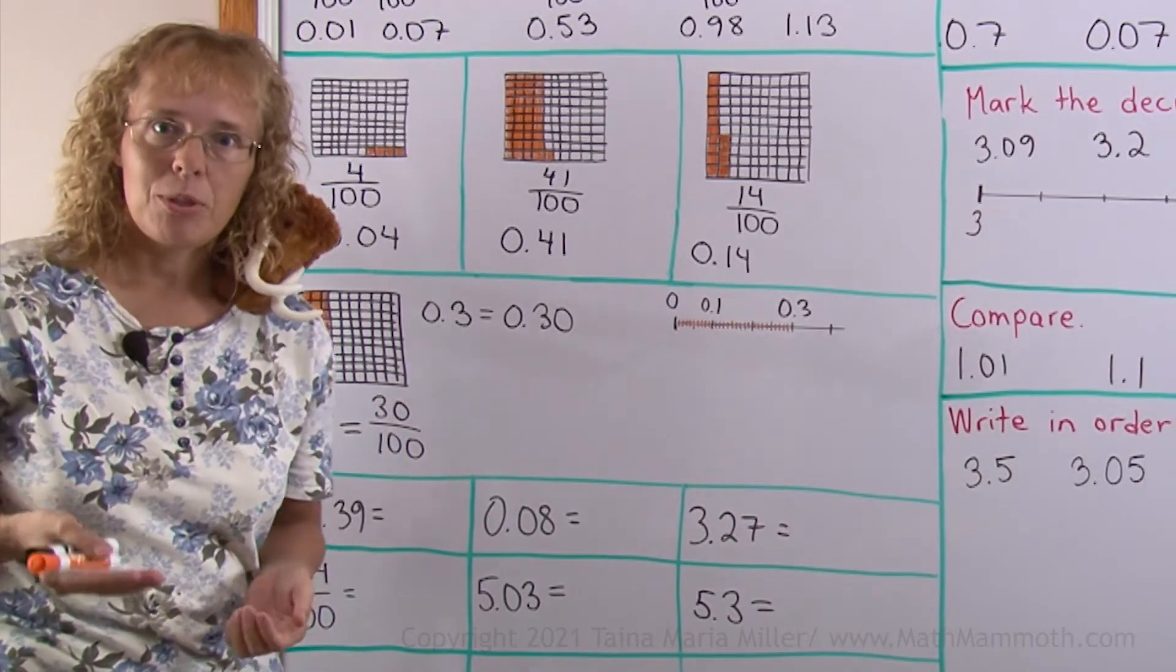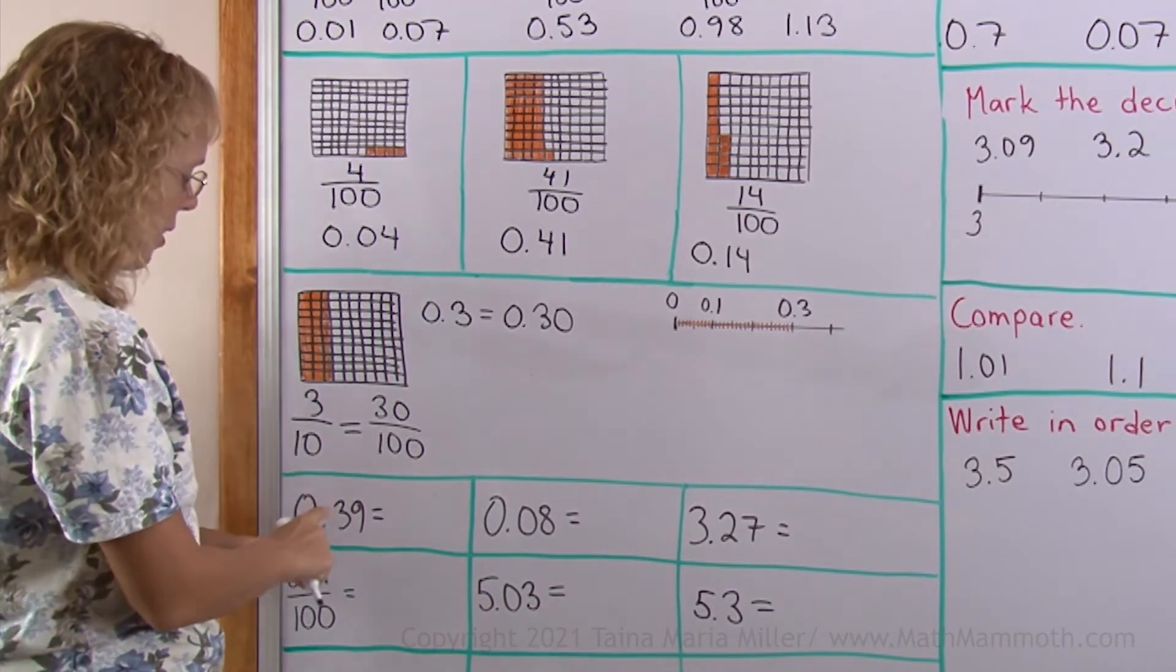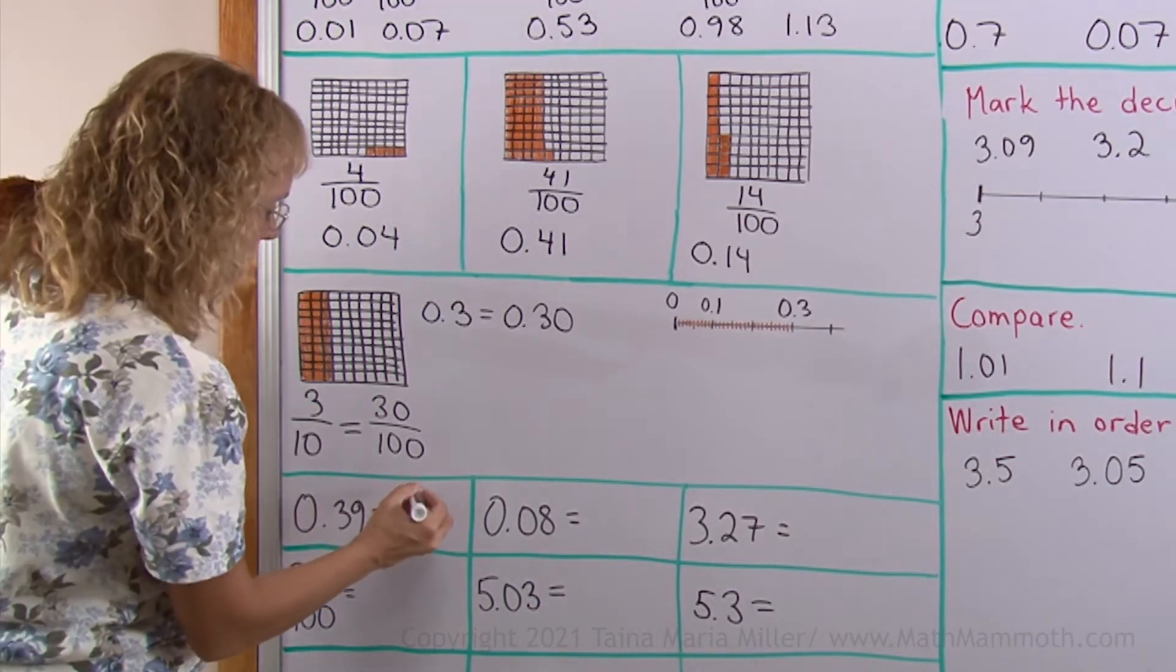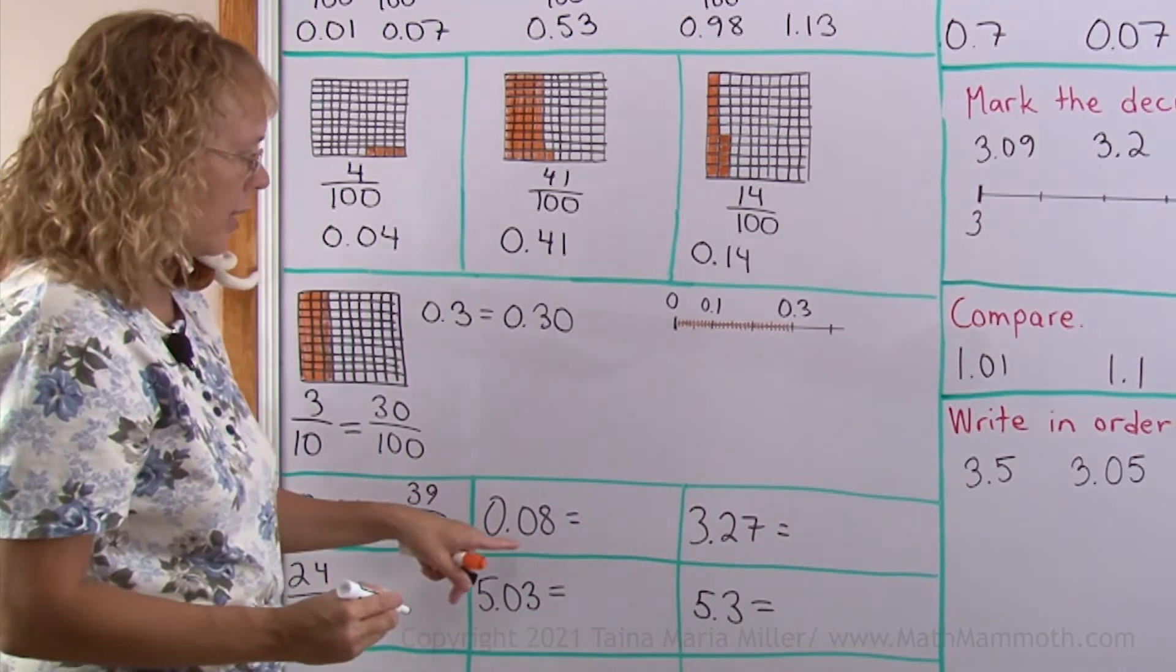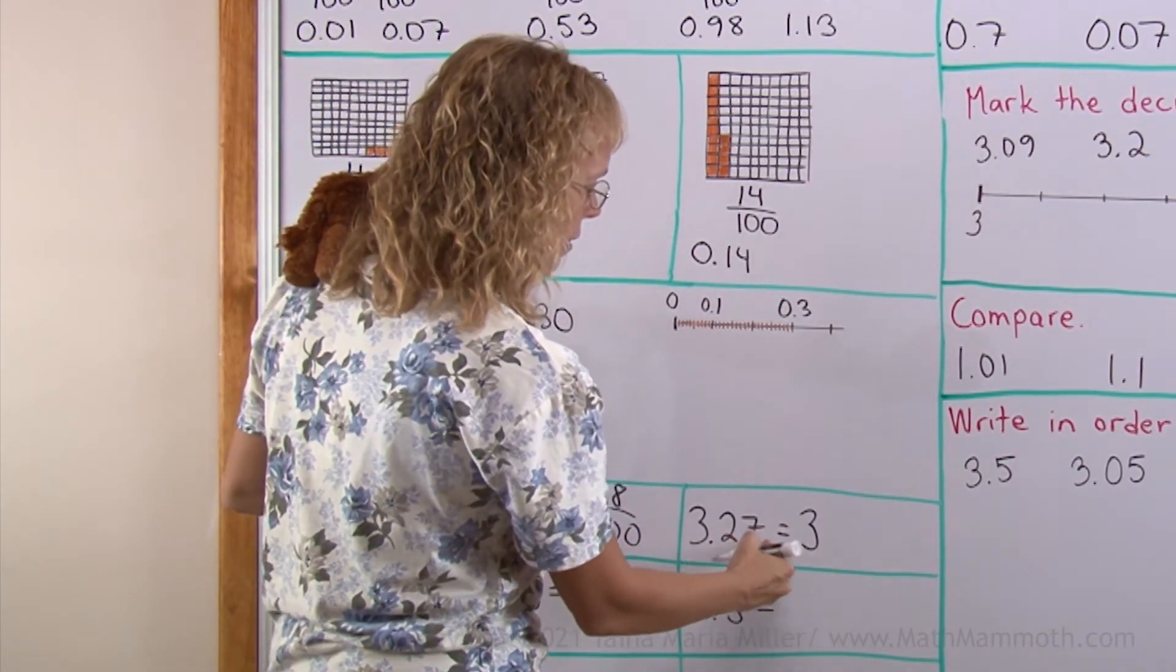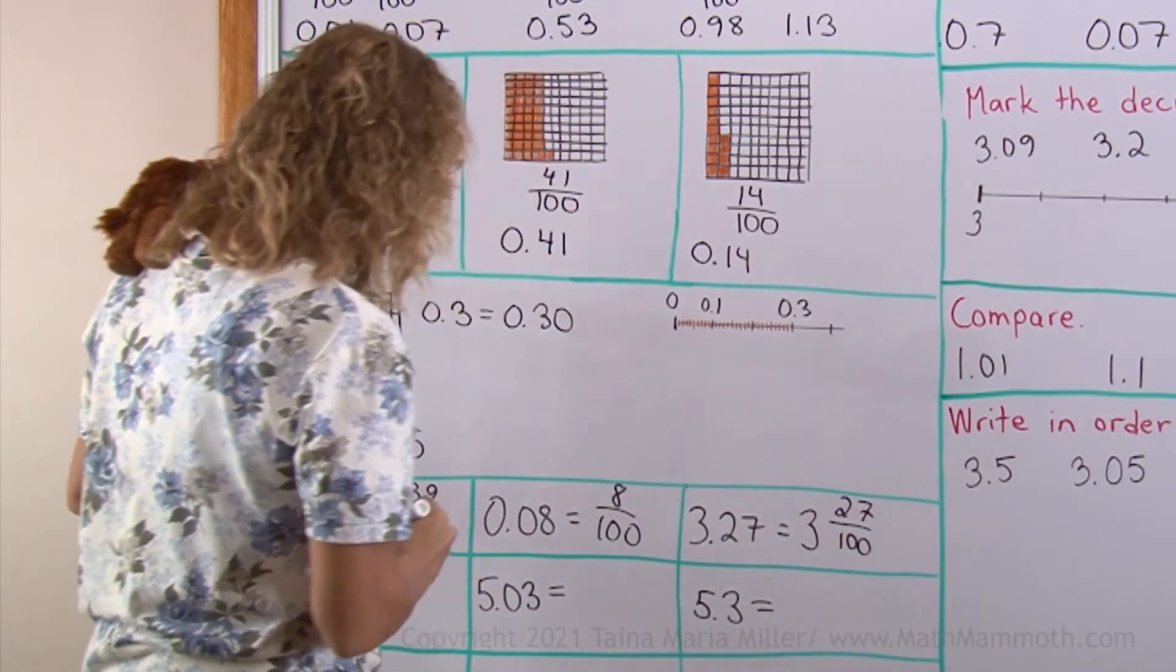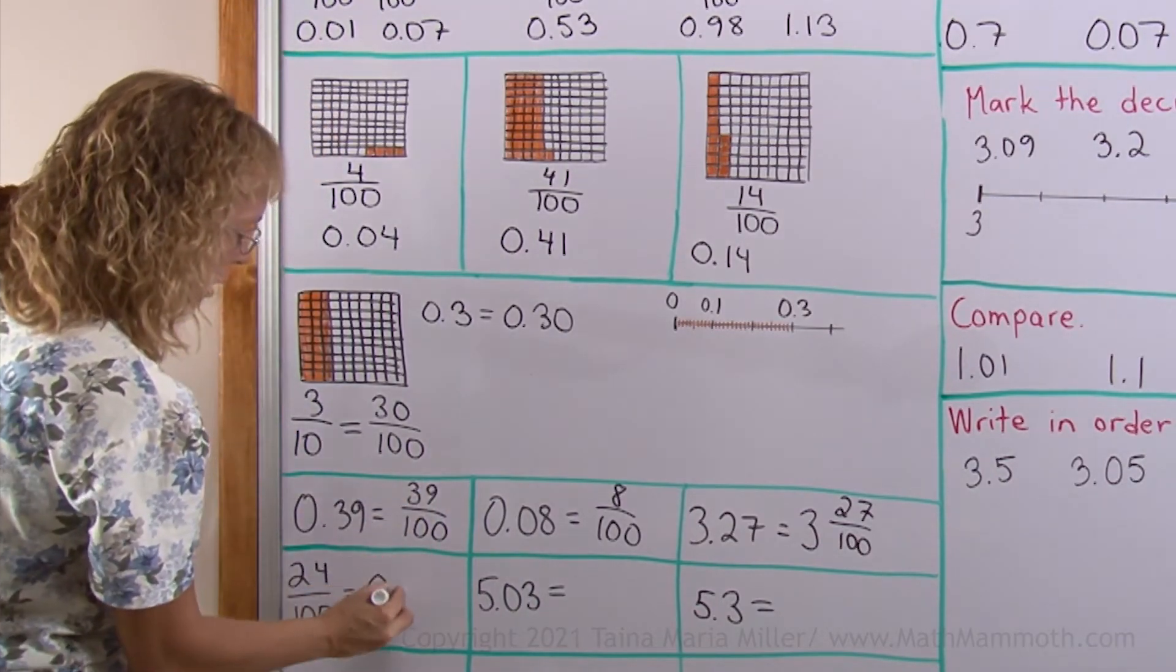Here, we will change the decimals into fractions and vice versa. This is a decimal. We read it as 39 hundredths, so that's how it is as a fraction. Very simple. This is read as 8 hundredths. Here's 3 and then 27 hundredths. This is 24 hundredths and write it as a decimal, so I got 0.24.